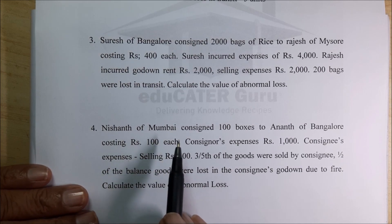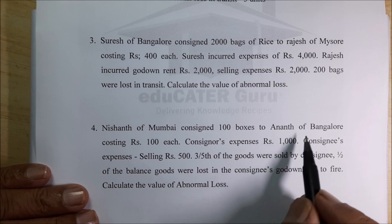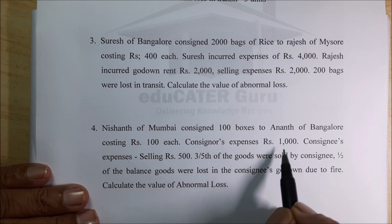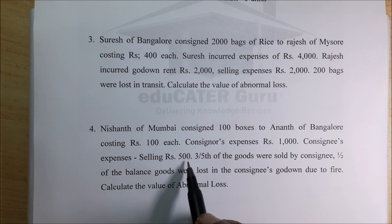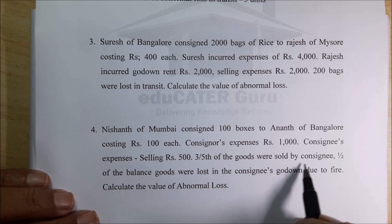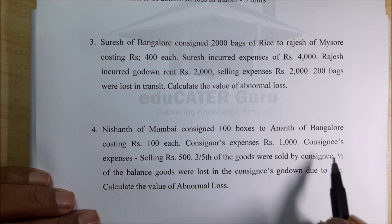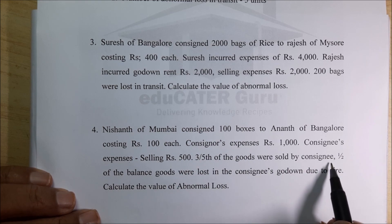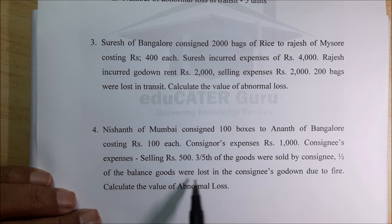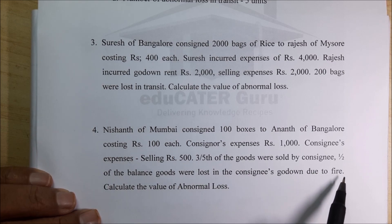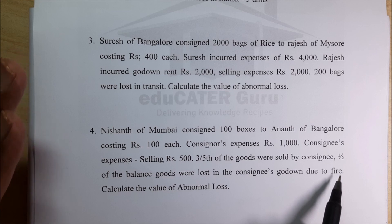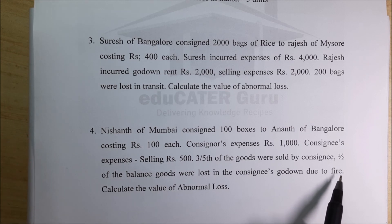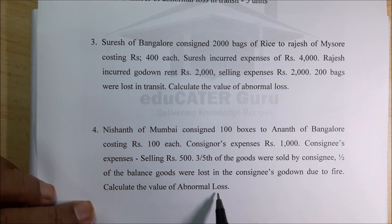Fourth problem: Nishant of Mumbai consigned 100 boxes to Anant of Bangalore, costing Rs 100 each. Consignor's expenses: Rs 1000. Consignee's selling expenses: Rs 500 — selling expenses are recurring expenses. Three-fifths of the goods were sold by the consignee. Half of the balance goods were lost in the consignee's godown due to fire — fire is abnormal loss, not normal loss. Calculate the value of abnormal loss.